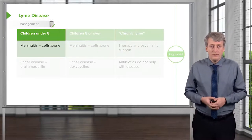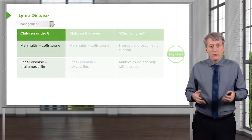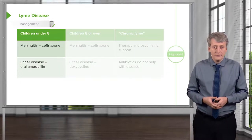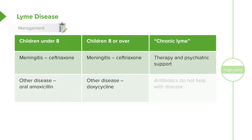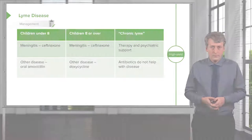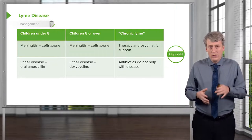For Lyme disease treatment: in children under eight with meningitis, we treat with ceftriaxone. With other disease such as arthritis or carditis, we treat with oral penicillin. In children over eight, for meningitis we treat with ceftriaxone, but for other disease we use doxycycline. For chronic Lyme — where patients have chronic pain or fatigue after having had Lyme disease — we treat this like psychiatric disease; antibiotics do not help, so we provide therapy and psychiatric support. It may be in the future that doxycycline for Lyme meningitis will be studied, so that might change.